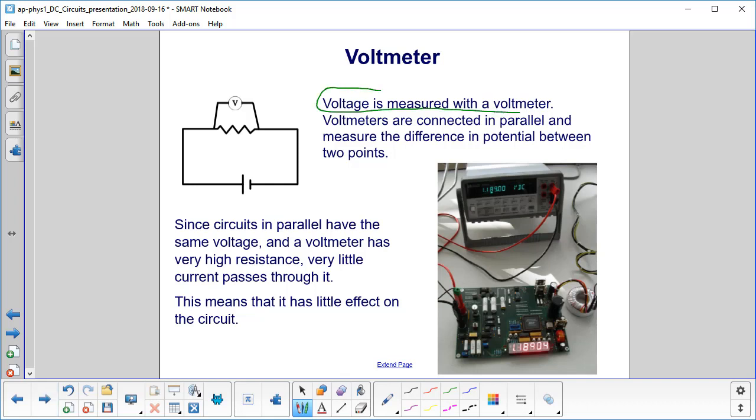That seems like that makes sense. Voltmeters are always connected in parallel with whatever you're trying to measure. They will measure the difference in potential between two points, so they give you the voltage drop.